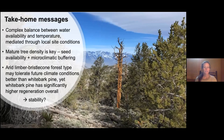Our results highlight interesting divergent responses among species, especially to tree density and moisture in various forms. Mature tree density is clearly important, and this effect could speak to the importance of seed availability or the buffering effects of canopy cover for microclimate conditions. Contrasting sensitivity to moisture and temperature suggests that limber and bristlecone pine forests may tolerate future climate conditions better than whitebark pine. However, the order of magnitude difference in regeneration — with whitebark having significantly more — may maintain fairly stable forest composition. Whitebark and limber pines will continue to be the most susceptible of the three to primary mortality agents in this region, so continued monitoring is definitely necessary.